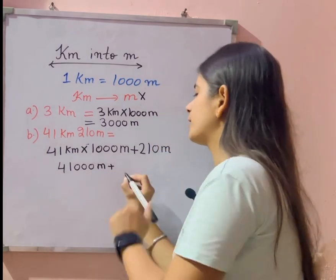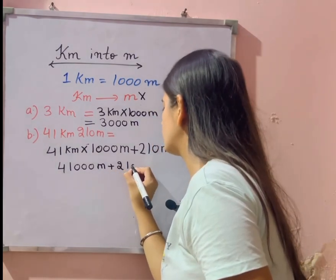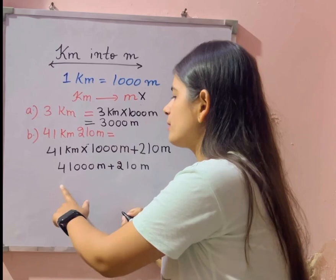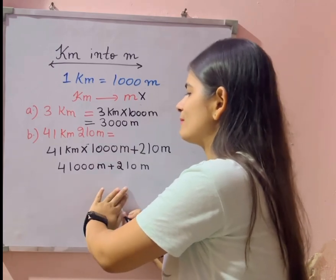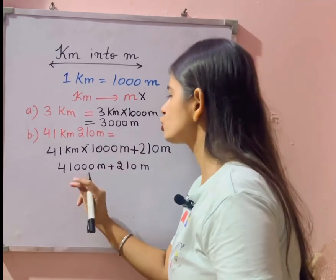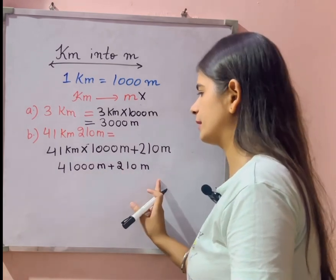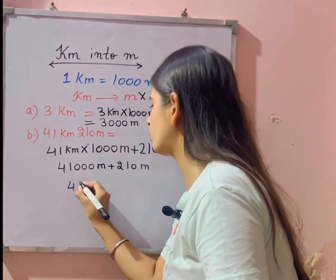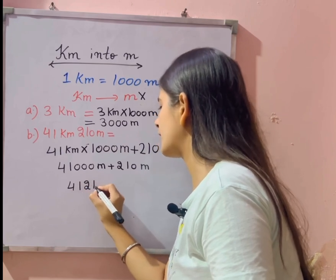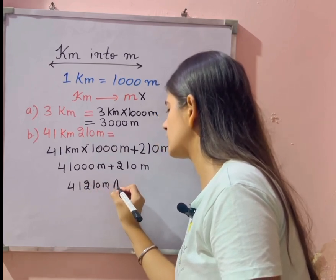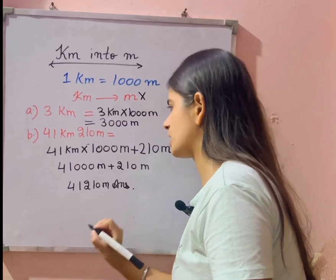me. Aap already two ten meter usko likh dengiye iske aage, two ten meter. Ab hume kuch nahi karna. Ab hume isko kya karna hai? Simply hum isko add karenge. So forty one zero zero zero meter plus two ten meter kitna ho jayega? Forty one two ten meter. To humara kya ho jayega guys? Yeh answer ho jayega.